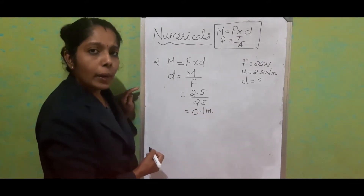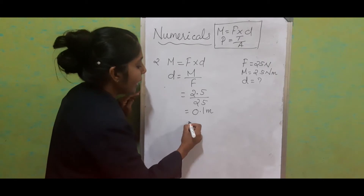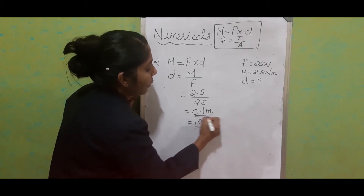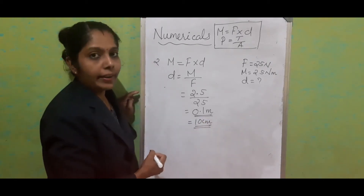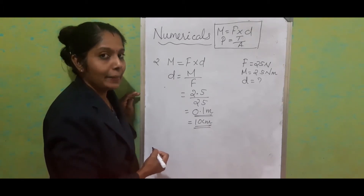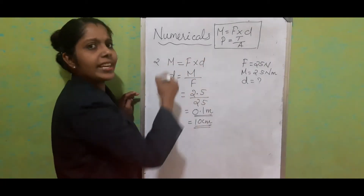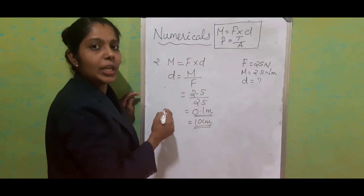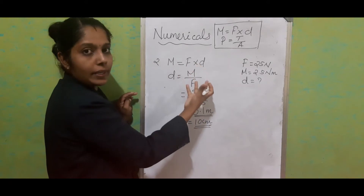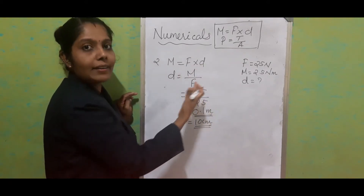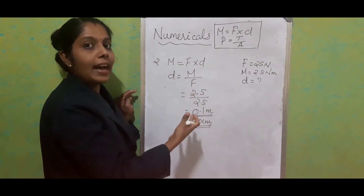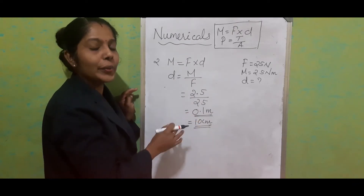Solving, we get 0.1 meter, which is equivalent to 10 centimeter. You can write it as 0.1 meter or 10 centimeter. So here we are just rearranging the equation: write down the data, substitute the values, keep the unknown factor on one side, rearrange, and find the answer with proper unit.